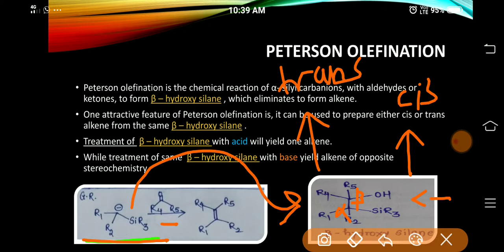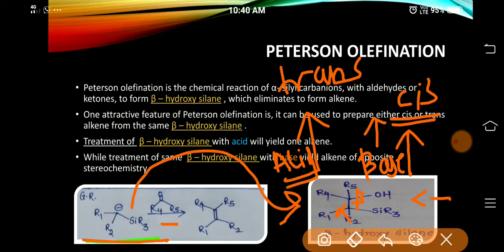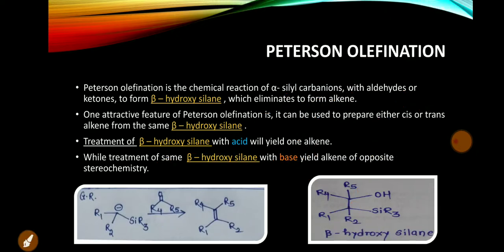Treatment of beta-hydroxysilane with acid will yield one alkene, while treatment of the same beta-hydroxysilane with base will yield the alkene of opposite stereochemistry. For example, if treatment with base gives the cis isomer, then treatment of the same beta-hydroxysilane with acid will give the alkene of opposite stereochemistry. Now let's understand this reaction better with the mechanism.